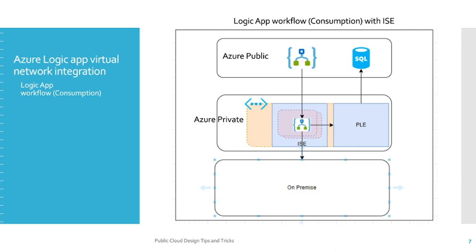Now let's understand the networking pattern of Logic App with a Consumption plan. The Logic App is a PaaS service that sits in the Azure public network. When you want to connect with services inside your virtual network — such as private link endpoints or on-premise systems — from a Logic App of Consumption type, you need to have an ISE (Integration Service Environment) in place. Your Logic App runtime will be configured within the ISE, and via the ISE it will be integrated with your private link endpoints, private services, or on-premise systems.